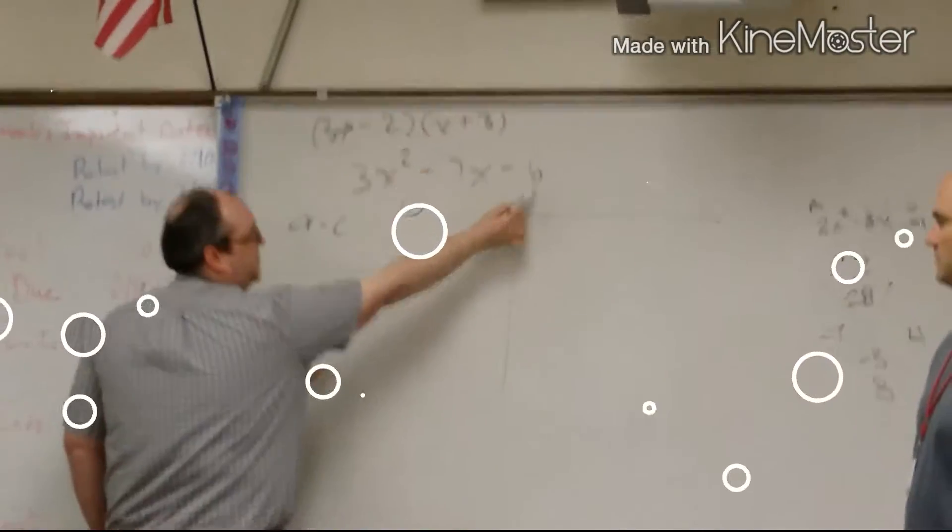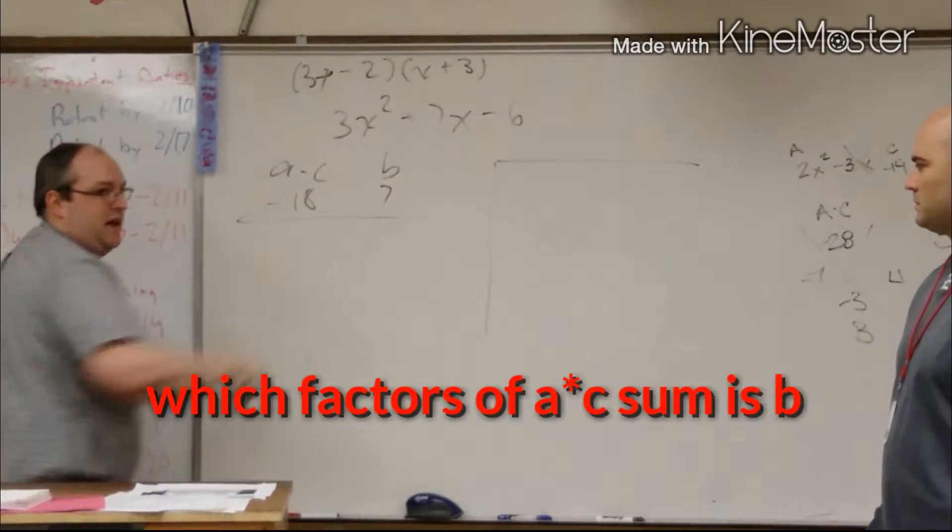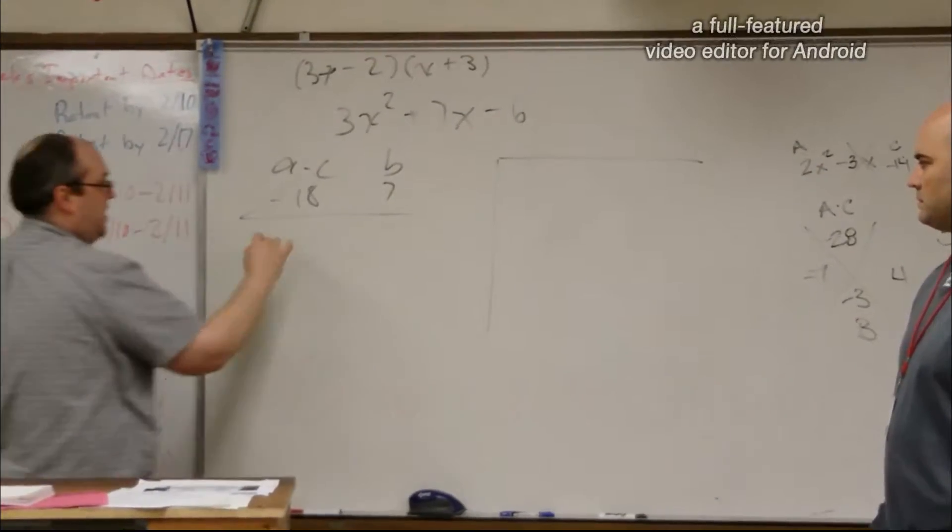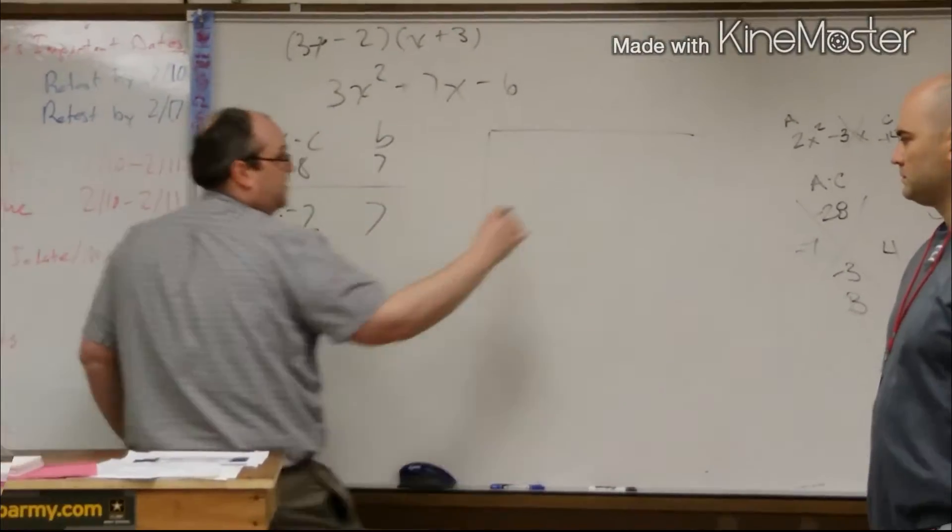So we look at a times c, 3 times a. B is 7, so factors of negative 18 that will add up to 7. In this case it would be 9 times negative 2 is negative 18, but 9 plus negative 2 is 7.